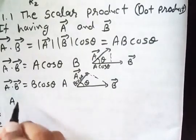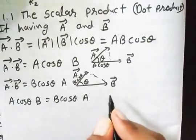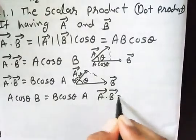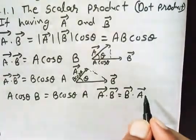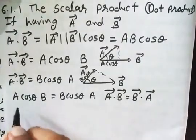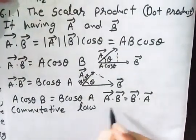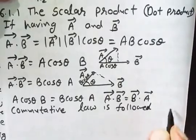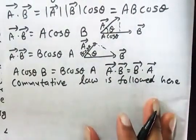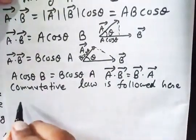So here I can write: A cos theta into B equals B cos theta into A. Both are correct, both are equal. If both are equal, then I can write vector A dot vector B equals vector B dot vector A. This is a law derived here. What is this law called? This law is called commutative law.